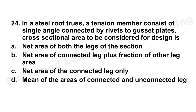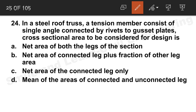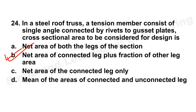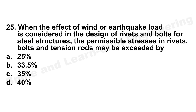Question 24: In a steel roof truss, a tension member consists of a single angle connected by rivets to gusset plates. The cross-sectional area to be considered for design is the net area of the connected leg plus a fraction of the other leg area. Option B is the correct answer.